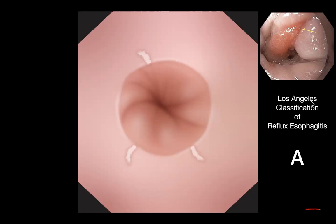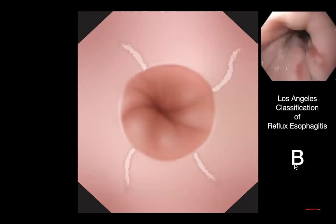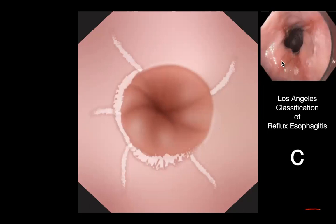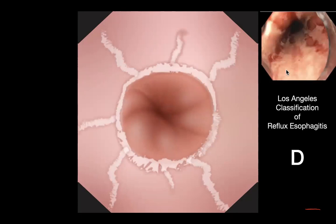A group of experts met in Los Angeles and developed the Los Angeles classification of reflux esophagitis. Grade A has erosions less than 5 millimeters. Grade B has erosions extending beyond 5 millimeters. Grade C is when the damage extends circumferentially but not in a complete circle — a few folds are involved. Grade D is when the damage goes all the way around with extensive circumferential involvement — that is severe erosive esophagitis.